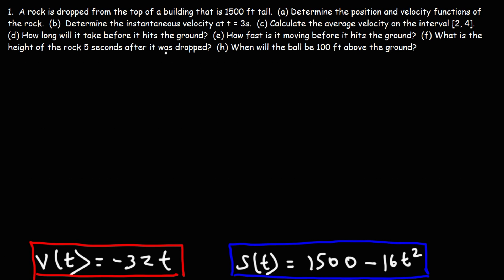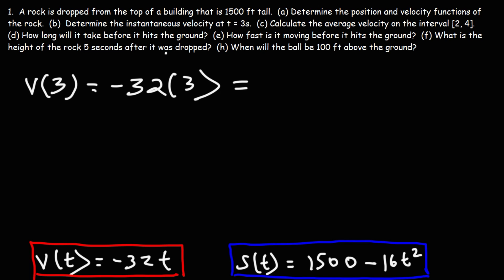Part B: Determine the instantaneous velocity at t equals 3 seconds. We plug into the velocity function: negative 32 times 3 equals negative 96 feet per second. That's the answer for part B.